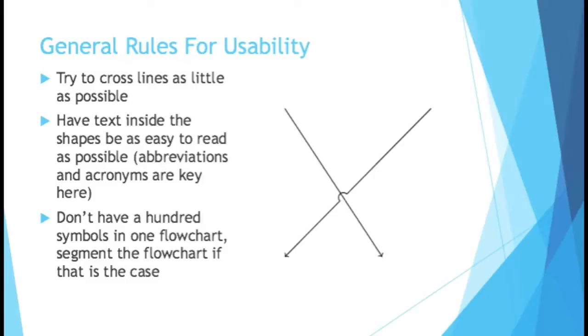Don't have a hundred symbols in one flowchart. If that happens, segment the flowchart. Break it out into different parts. You can probably find natural areas in your high-level process where you can break things apart. Unless for some reason you need your 90 symbols because it all happens very quickly, which usually isn't the case.